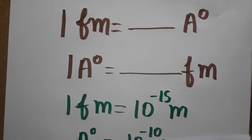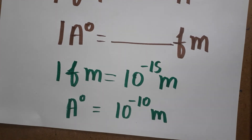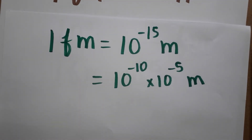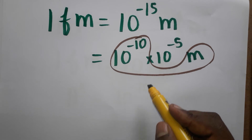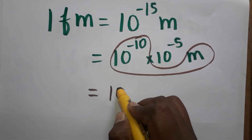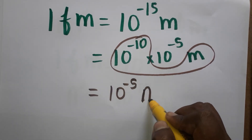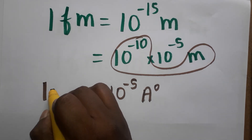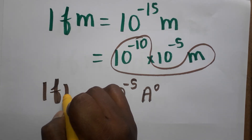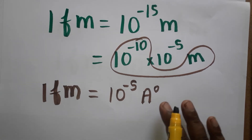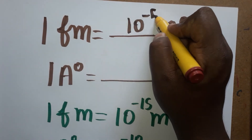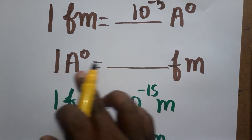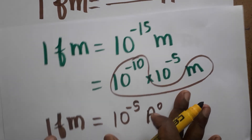Since 10 power minus 10 meter can be taken as one angstrom unit, we substitute to get 10 power minus 5 times angstrom unit. Therefore, one femtometer is equal to 10 power minus 5 angstrom unit. Now we do the reverse: angstrom unit to femtometer.